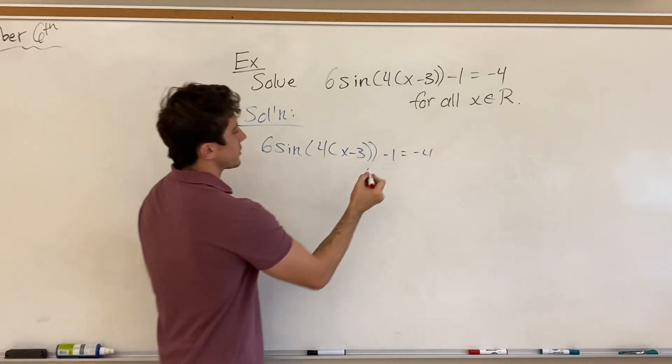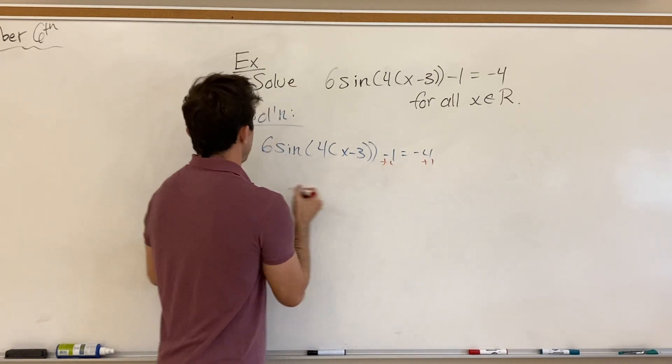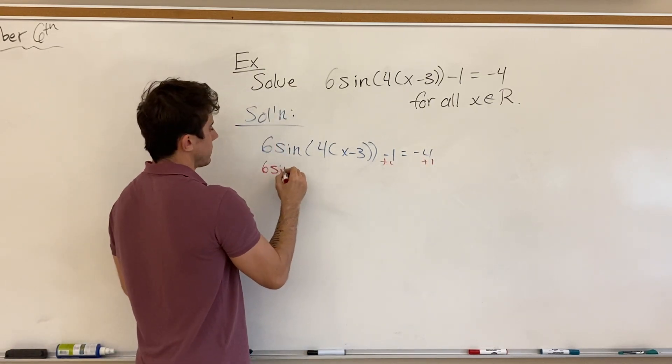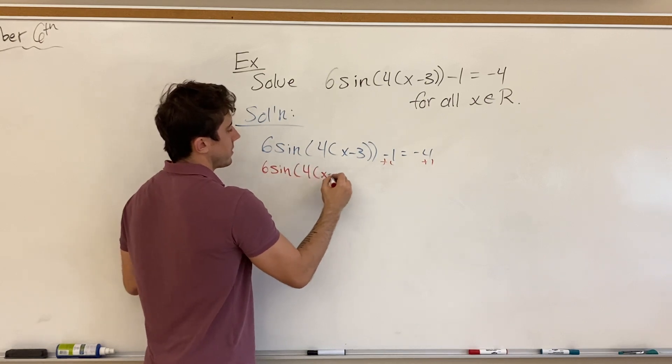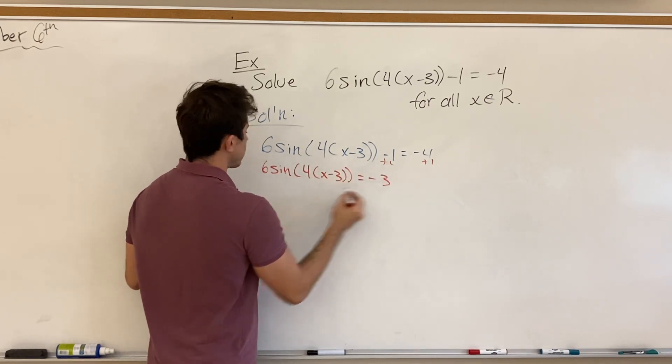So the same way we always would, let's start off by adding 1, and so 6 sine of all that is equal to negative 3.